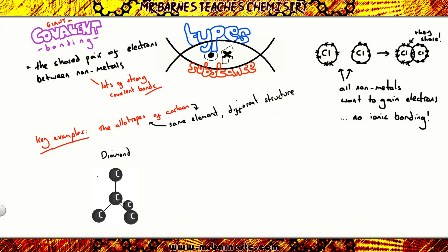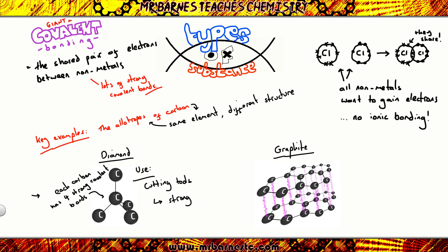So if we start with diamond, you can see here every carbon has four strong covalent bonds to them. This makes it really strong. So it's used in cutting tools. Graphite you can see is also made out of carbon, but it looks different. It has a different structure. Every carbon atom here only has three strong covalent bonds. This gives it a delocalized electron. That delocalized electron is free to move, which makes it useful in electrodes. The other useful property of graphite is it has layers. Those layers can slide past each other and because they can slide past each other, they reduce friction and therefore they're really useful as lubricants in cars.